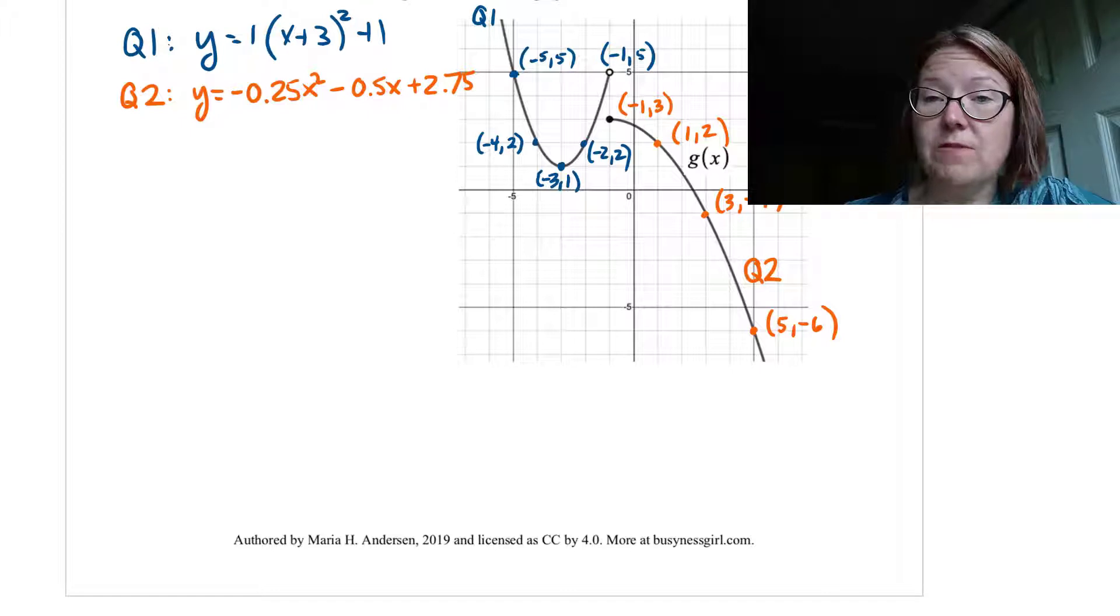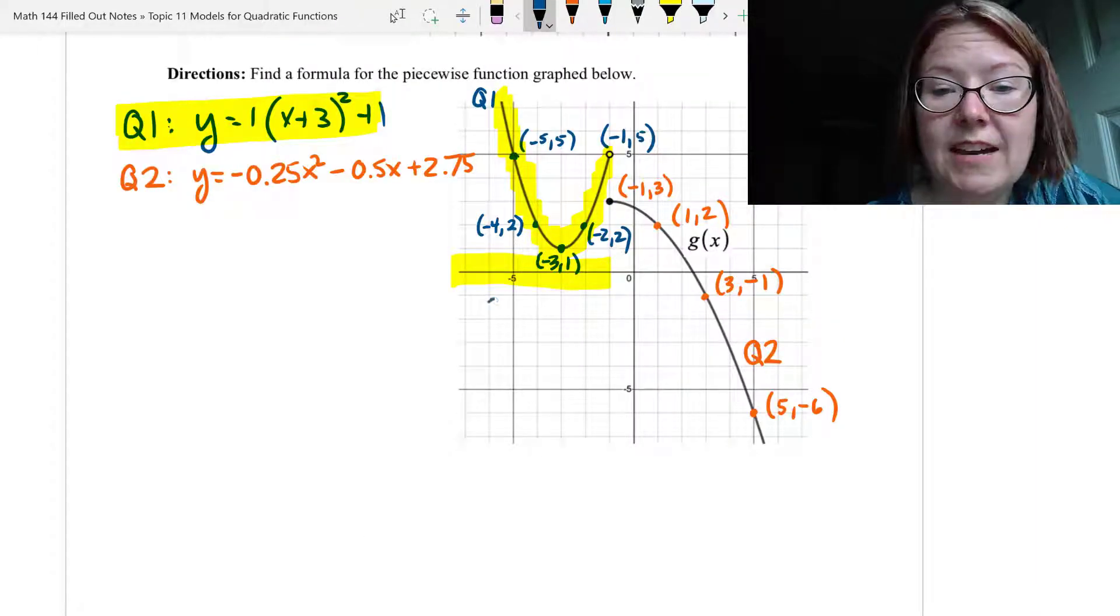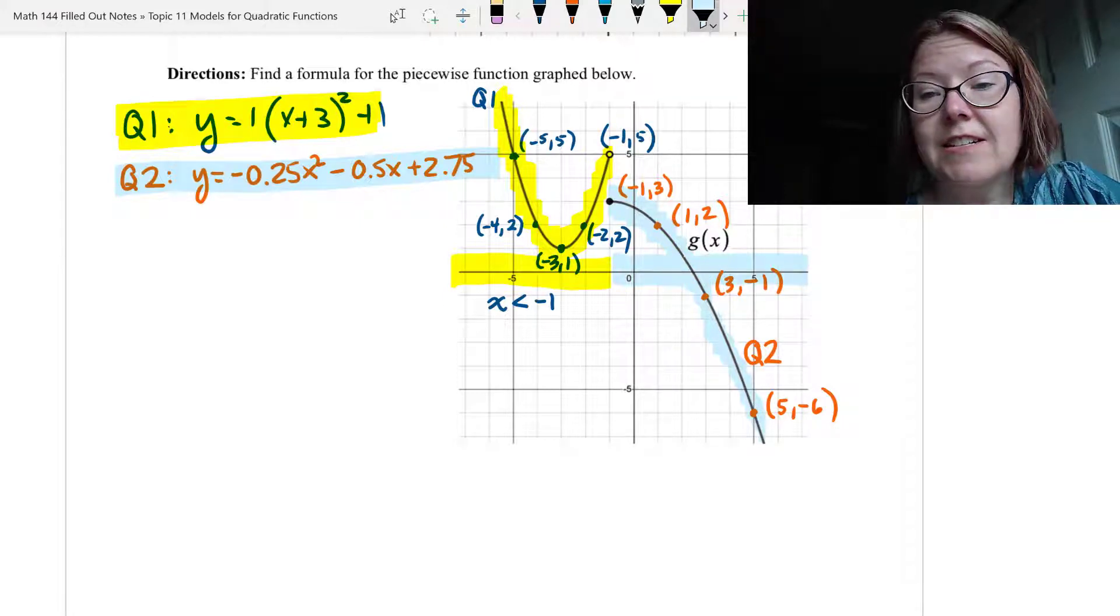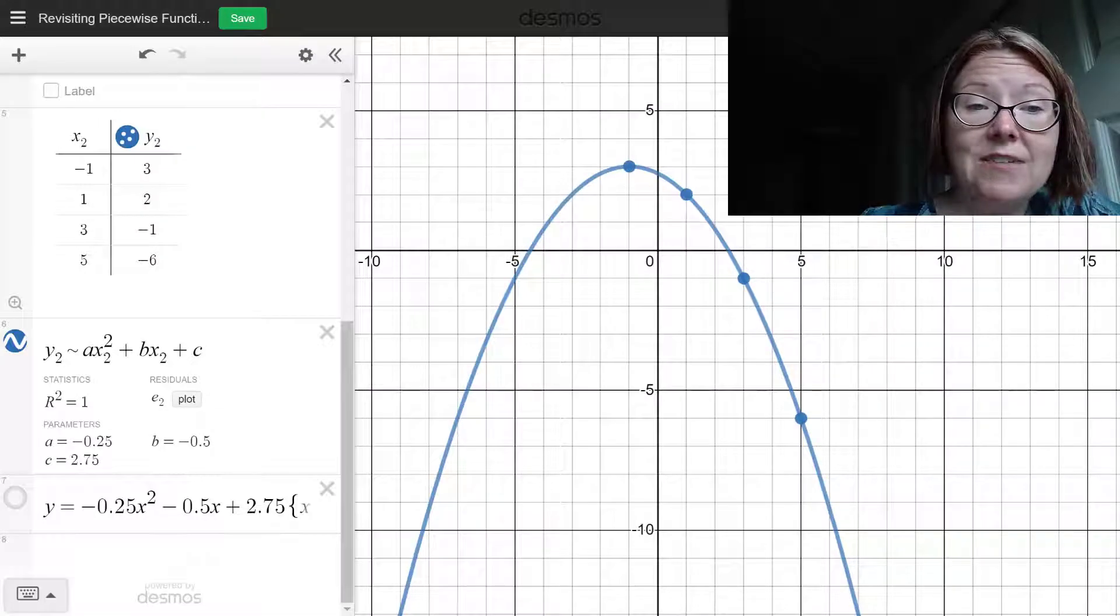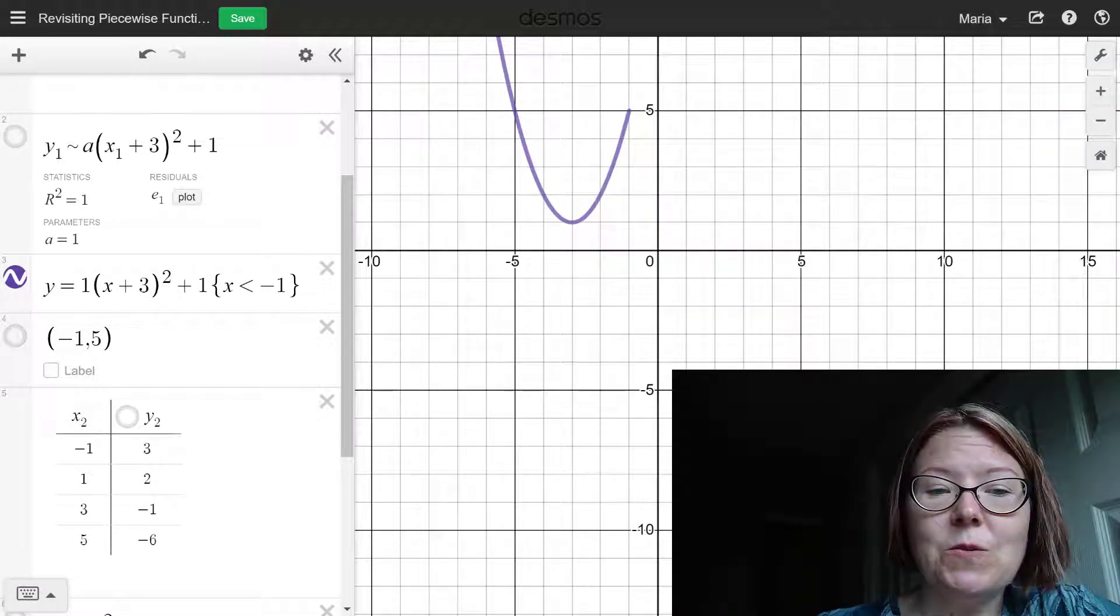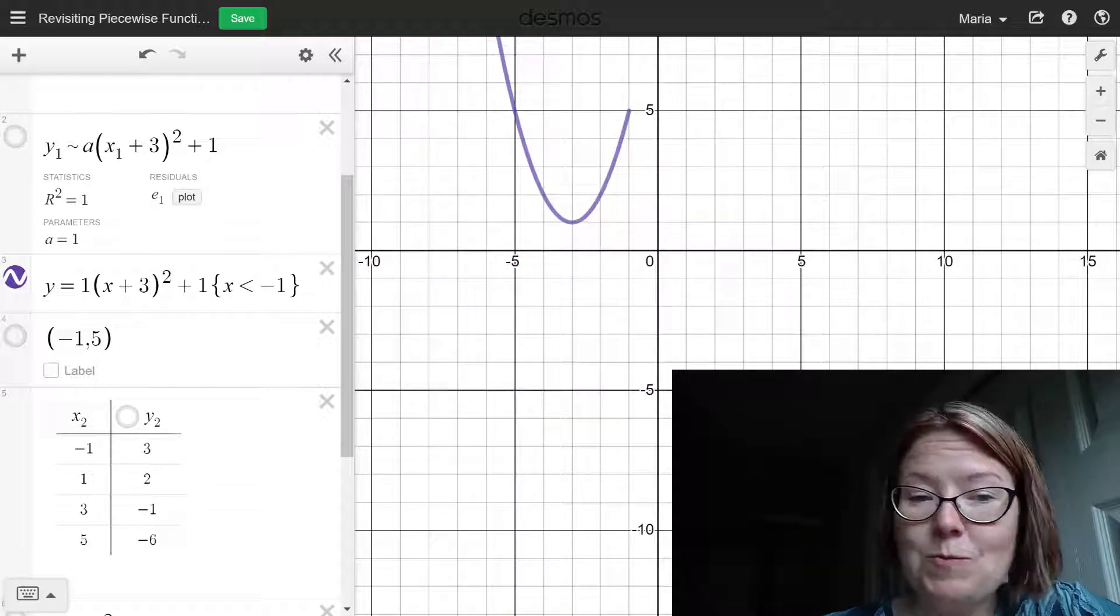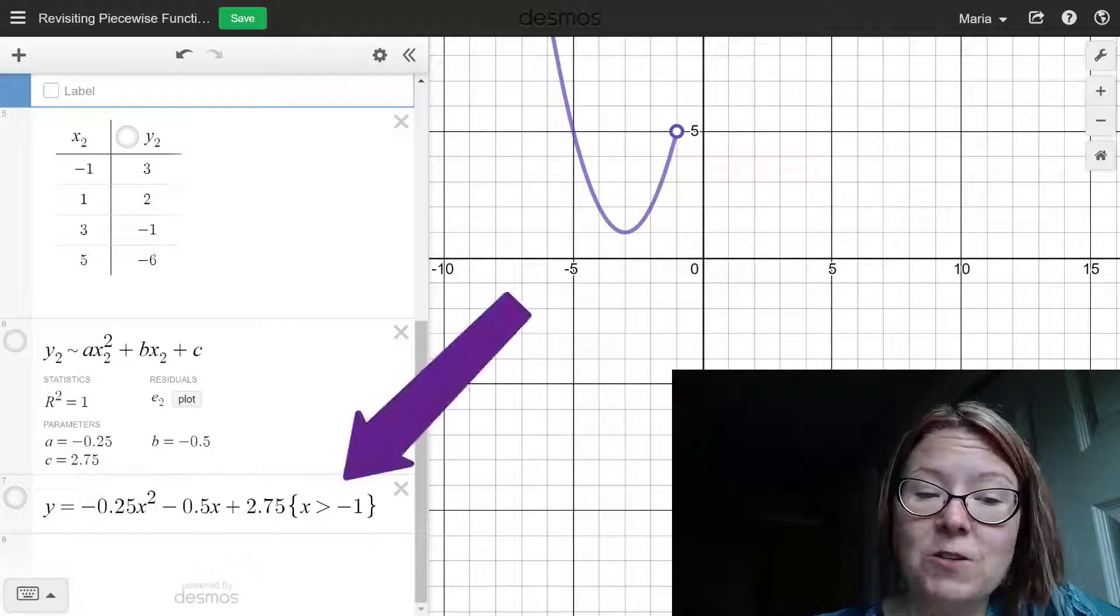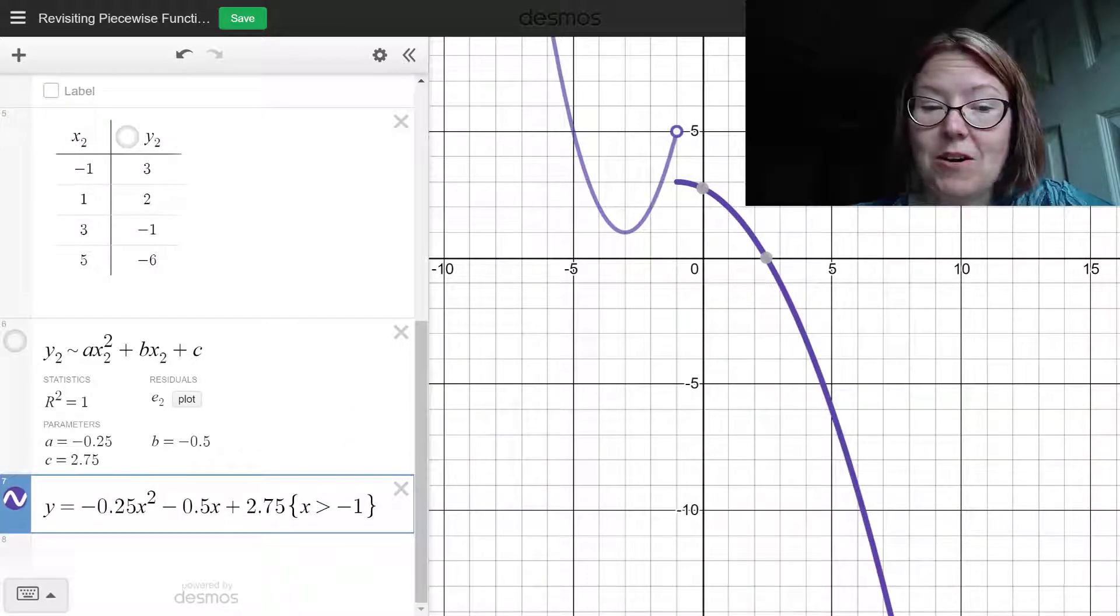Now I just need the domain on which to use each of these. Q1 gets used from negative infinity all the way up to -1, but not including -1. That is, x is less than -1. Q2 is used from -1 going all the way to infinity on the x-axis, and we can include the endpoint. So the domain for Q2 is x is greater than or equal to -1. We can check that over in Desmos by adding the restrictions. I'm going to turn off my points and my regression models and just jump back to the function with its restriction. So y equals 1 times (x + 3)² plus 1, left brace x is less than -1, right brace. You see that did restrict the domain in the proper way, and we can even add the endpoint (-1, 5) as an open circle. Let's add that second function. y equals -0.25x² - 0.5x + 2.75, left brace x is greater than -1, right brace. And when I add that you see we also have the exact function we needed.